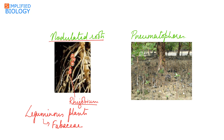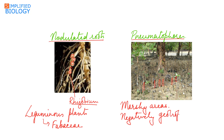Another modification of tap roots are the pneumatophores. Pneumatophores are respiratory roots seen in plants growing in marshy areas. These roots are negatively geotropic — they grow away from gravity, coming out of the soil. They have pores through which exchange of gases occurs. Pneumatophores are seen in mangrove plants. Example: Rhizophora.